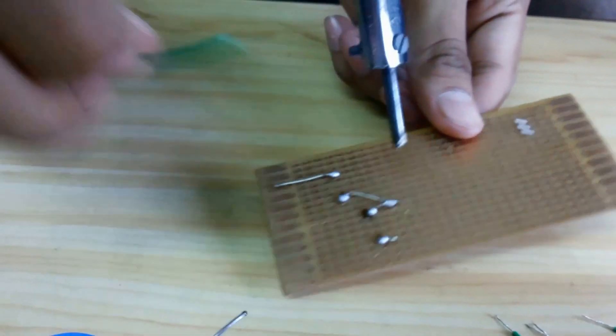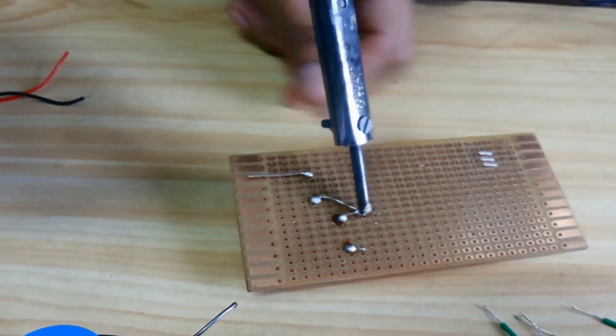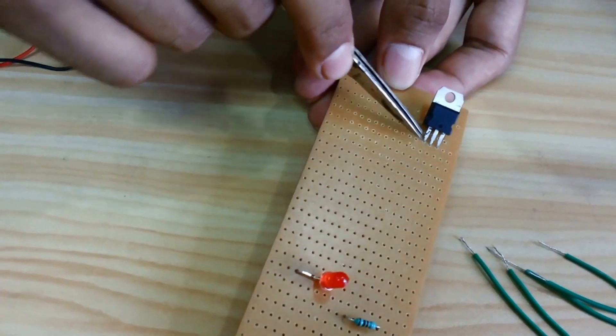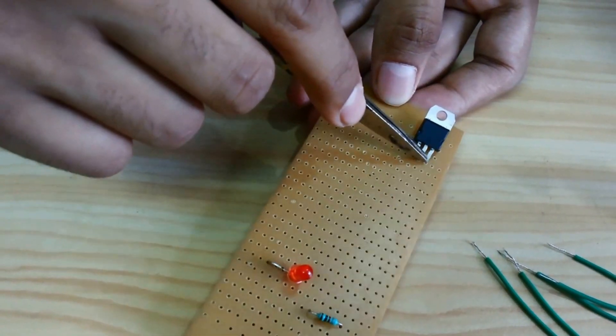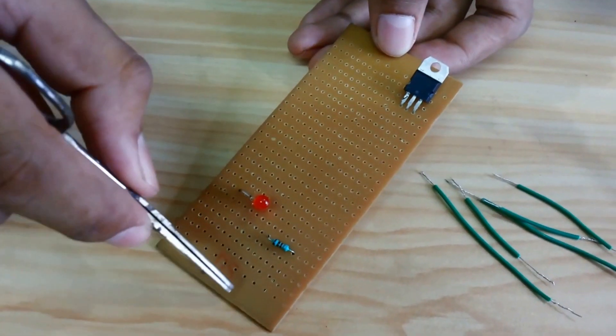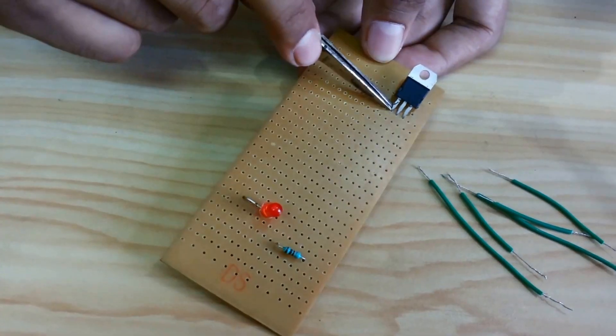Now we will need some wires. This is input, this is ground, and this is output. The positive end of the supply will go to the input of the IC.